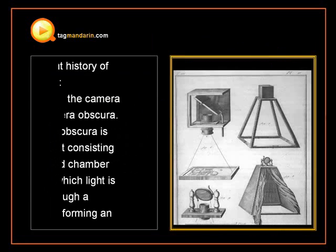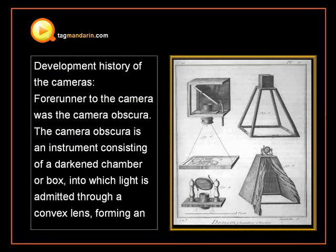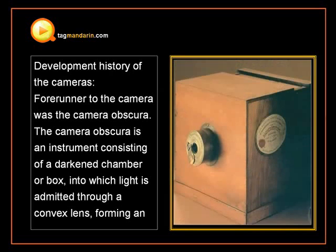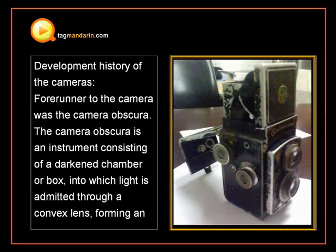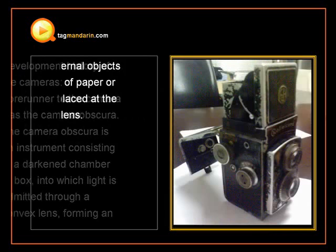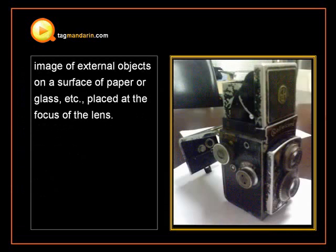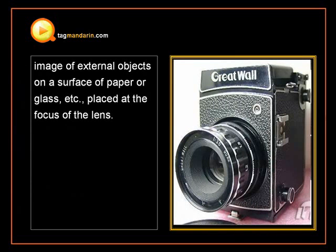Firstly, let's look at the development history of cameras. The forerunner to the camera was a camera obscura. The camera obscura is an instrument consisting of a darkened chamber or box into which light is admitted through a convex lens, forming an image of external objects on a surface of paper or glass, placed at the focus of the lens.